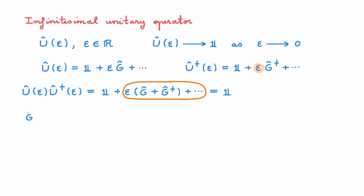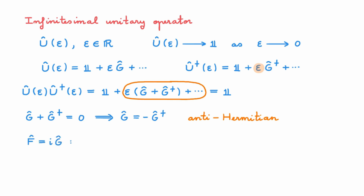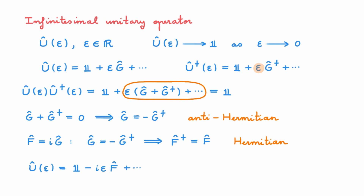As U(ε) is unitary, this whole series must equal the identity operator. This means the higher-order terms vanish, and for the first-order term, G + G† = 0, so G is anti-Hermitian. It is typically convenient to define a new operator F = iG. With this definition, the anti-Hermitian relation for G implies that F is Hermitian. This means we can always write an infinitesimal unitary operator as U(ε) = I - iεF, where F is Hermitian. Conversely, if F is Hermitian, then this operator U is unitary. You can find an example in the video on the time evolution operator, where the infinitesimal parameter is dt and the Hermitian operator is the Hamiltonian.